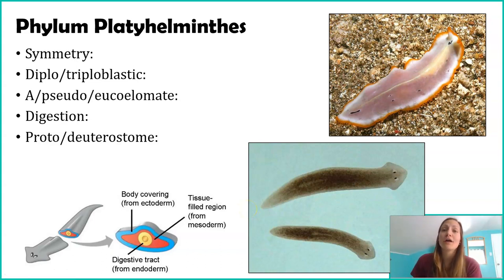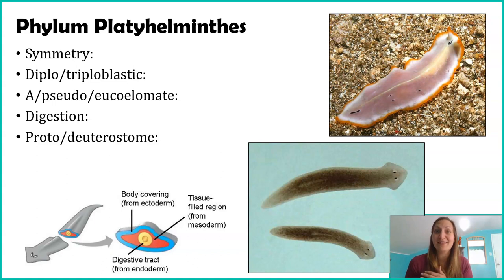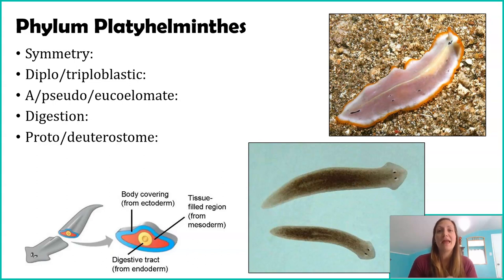They are also in the triploblastic branch. The only diploblastics are phylum Cnidaria — those jellyfish and sea anemones. Being triploblastic means they have three different germ layers: the endoderm, the ectoderm, and the mesoderm.